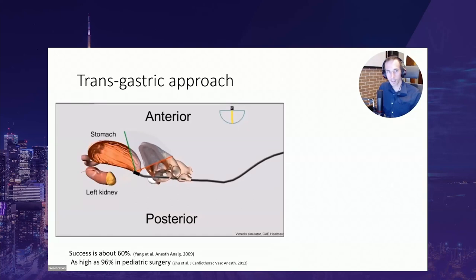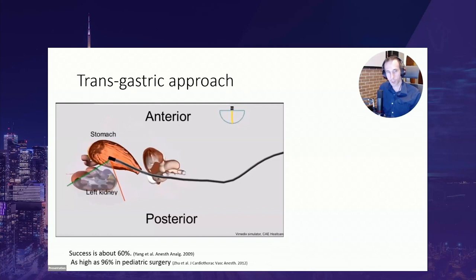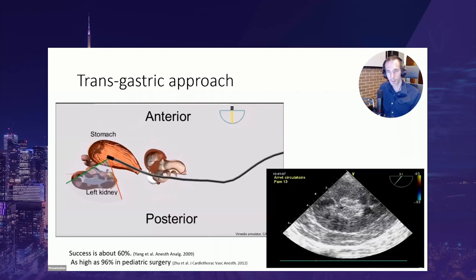Using TEE, you can also usually see the left kidney using a transgastric approach. Success is about 60% in adults, but papers in the pediatric literature report a higher success rate using TEE. You obtain a view that allows you to identify the normal structures on 2D ultrasound.